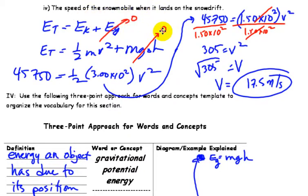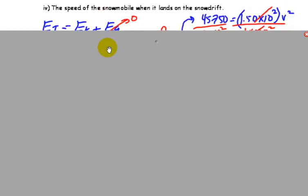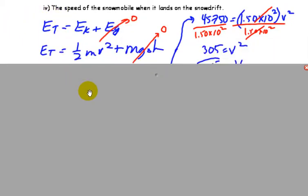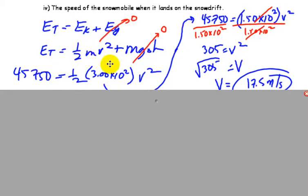And the speed of the snowmobile when it lands on the snow drift. So when it lands on the snow drift, it's at a height of zero. So since EG is equal to mgh, if H is zero, everything's going to be zero. And if you recall, when we're talking about the bottom part of a motion, chances are the EG will be zero, and 100% of your total energy will be in the form of kinetic energy. So as you can see here, this part is zero, so ET is just going to be equal to the kinetic energy.